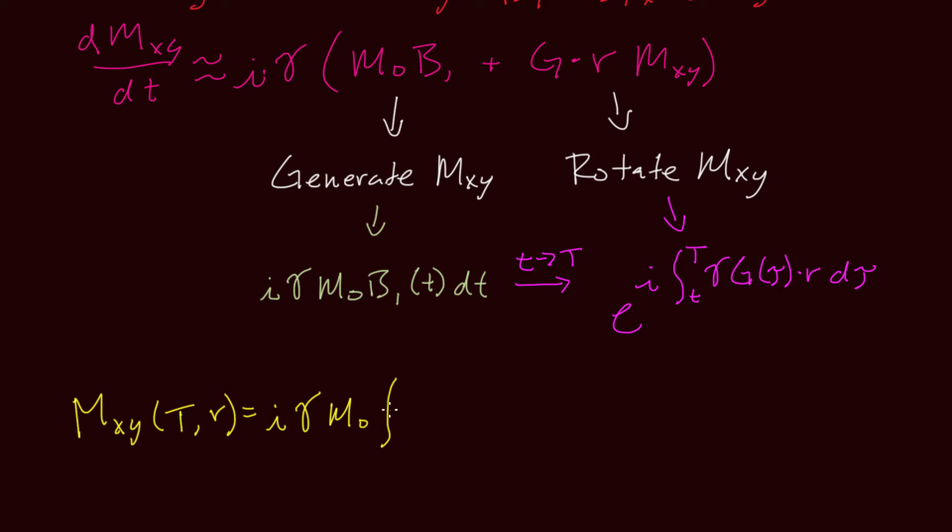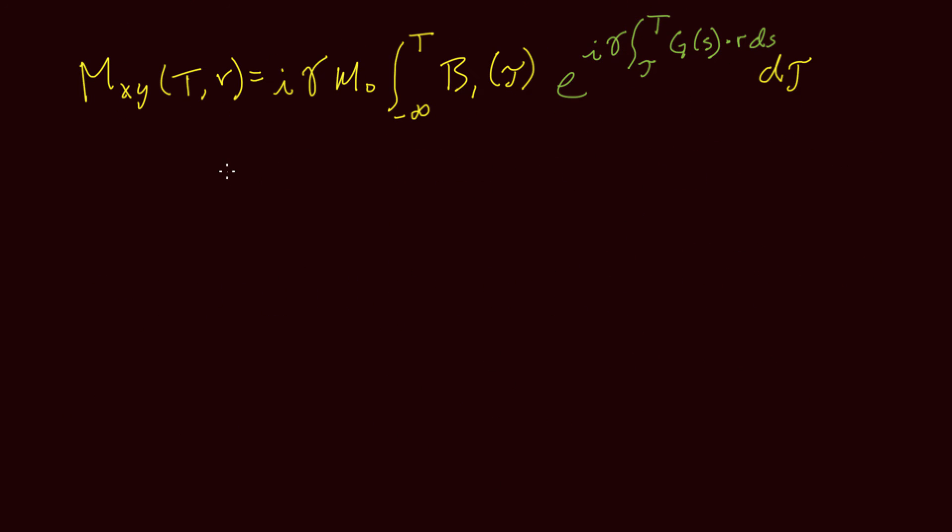These two observations allow us to write down the solution to the simplified Bloch equation directly. At time capital T, we have a total transverse magnetization that is the integral of the first term, and each bit of transverse magnetization has been rotated by this term. Now if we define excitation k-space as the time integral of g over an interval ending at time capital T, then we arrive at an expression for the transverse magnetization that looks a bit like a Fourier transform of B1, but not quite.